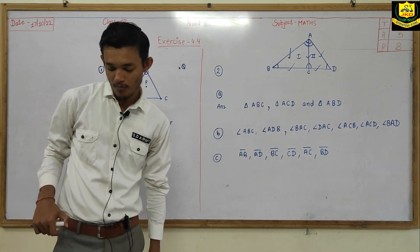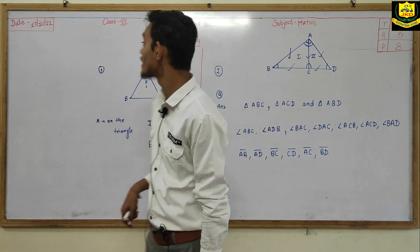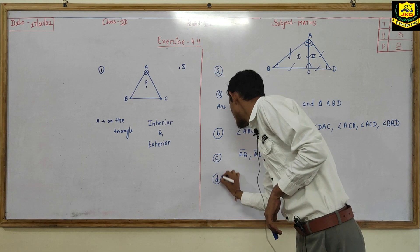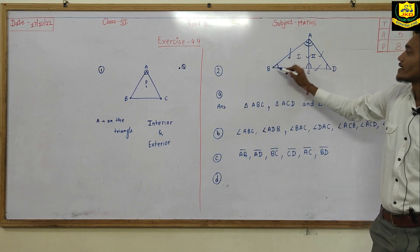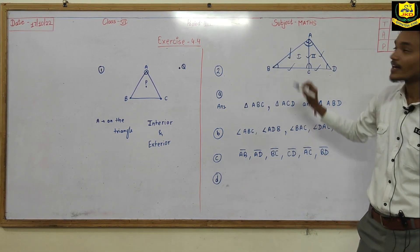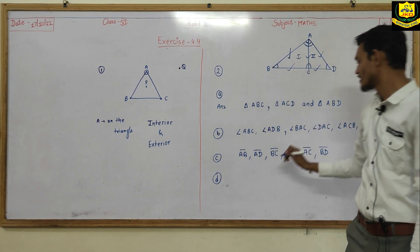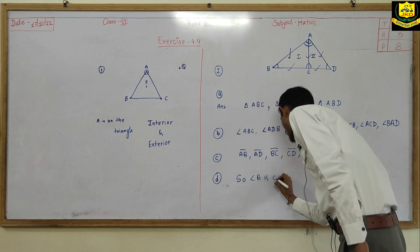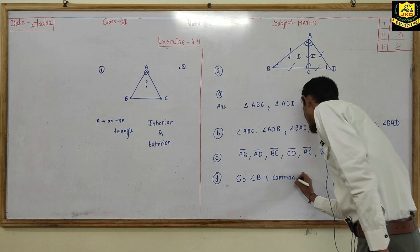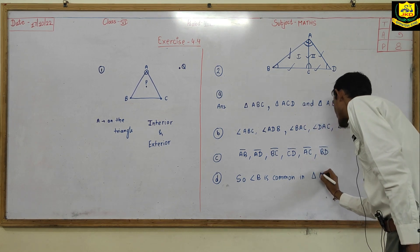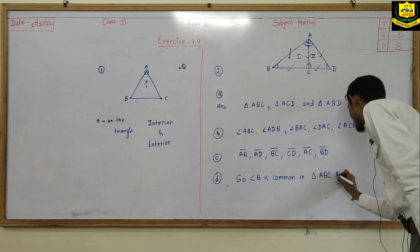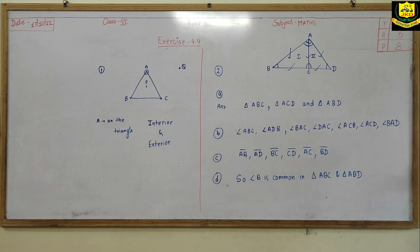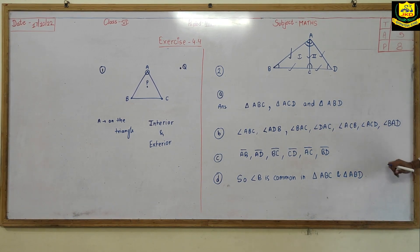And last: which two triangles have angle B as a common angle? Angle B is common in triangle ABC and triangle ABD. So this is the last part of question number 2.